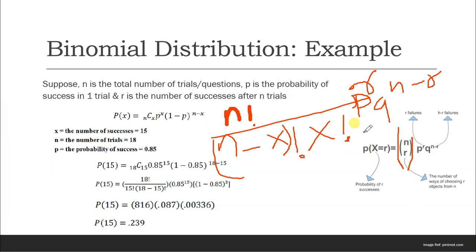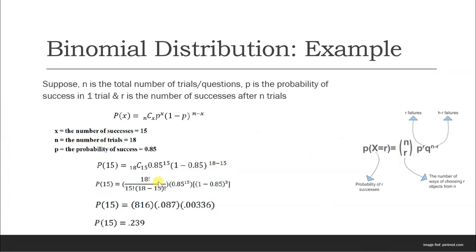We have to break this formula in this way. Suppose the number of successes is given as 15, and the number of trials is 18. The probability of success is 0.85. Now we will be filling this value inside this formula.